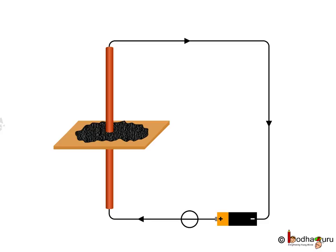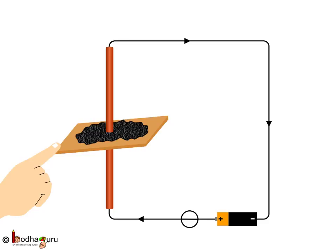Now sprinkle some iron filings uniformly on the cardboard. Next we gently tap the cardboard a few times.